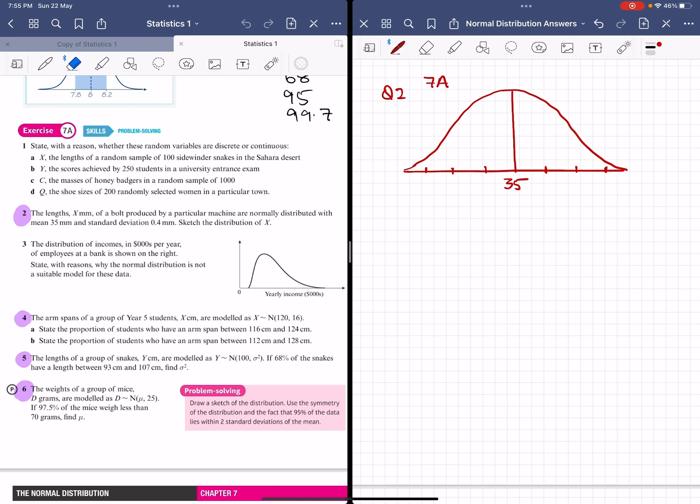The standard deviation is 0.4, so we add multiples of 0.4 to 35. The first one will be 35.4.